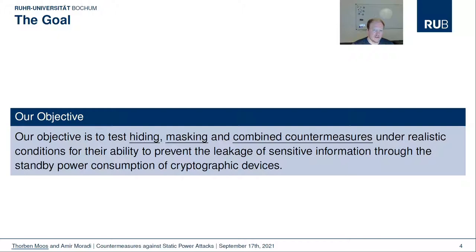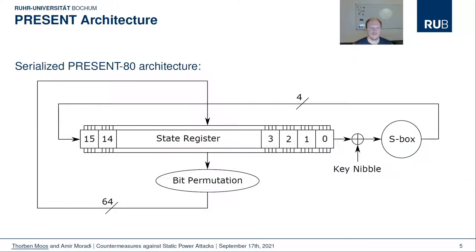While all previous experimental works on the subject have concentrated on exploiting the static power consumption in the most clever or easy way, we focus here on the constructive side and develop, practically evaluate and compare a number of countermeasures against this threat — with the help of a 28nm ASIC specifically designed and manufactured for this purpose. The countermeasures will all be applied to a very compact serialized hardware implementation of the block cipher PRESENT-80, which consists of one 4-bit S-box circuit, a state and key register, and a bit of control logic.